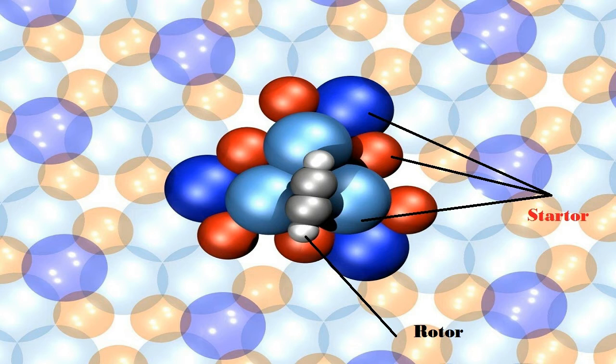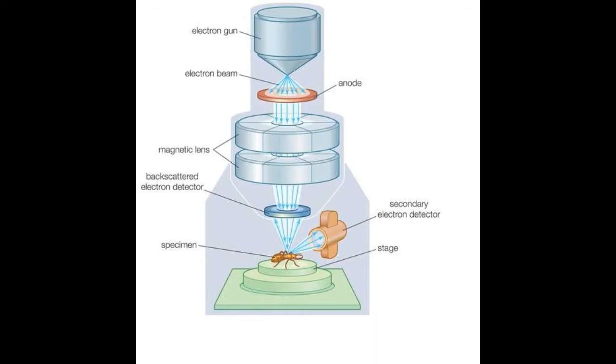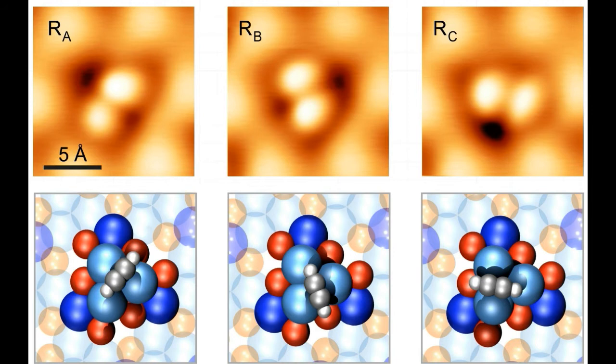Here in this rotor, this rotor rotates on the surface of the stator. As we know that for a motor to rotate it needs energy. Here this molecular motor can be driven by both electrical and thermal energy. As it is a molecular motor, a very tiny amount of electrical energy is required to rotate. So a very small amount of electrical energy is sent into the motor from an electron scanning microscope, which makes the rotor to rotate a sixth of its revolution in a particular direction.